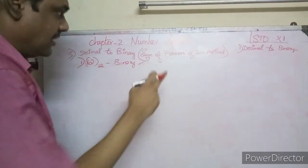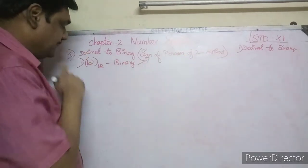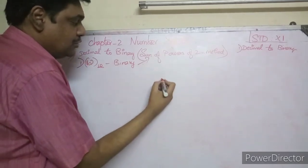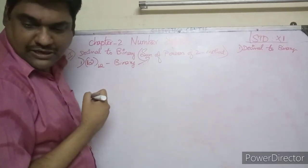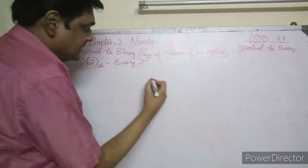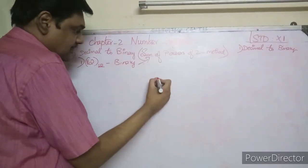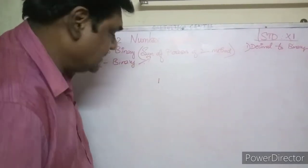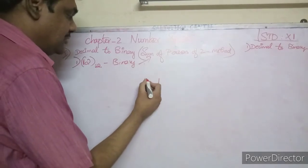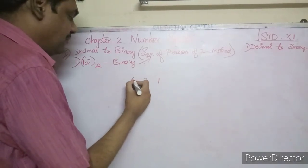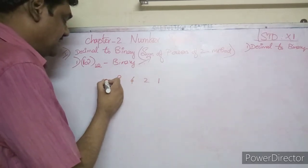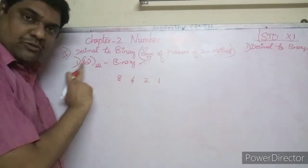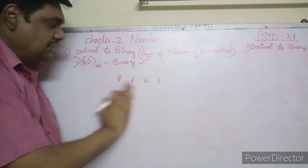For example, let's convert 12 base 10 to binary using sum of powers of two. First, put 1 on the right side. Then double it: 1, 2, 4, 8, 16. We go up to 16 because 16 is greater than 12, so we stop there.